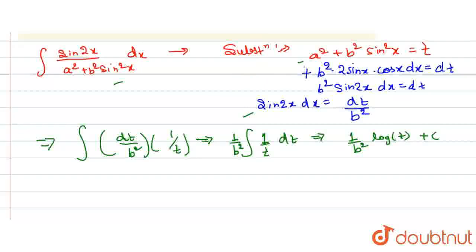Finally, we know that t is equal to a squared plus b squared sin squared x. So we can write this as 1 by b squared log of a squared plus b squared sin squared x plus c as constant of integration. So this is our answer.